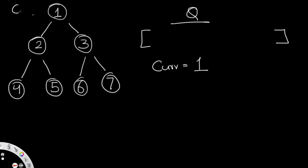Since node one has a left child two and a right child three, we know we're not at a leaf. So we make the left child two point to the right child three — two's next becomes three. Three by default points to null. Then we repopulate our queue by adding first the left child two, then the right child three.